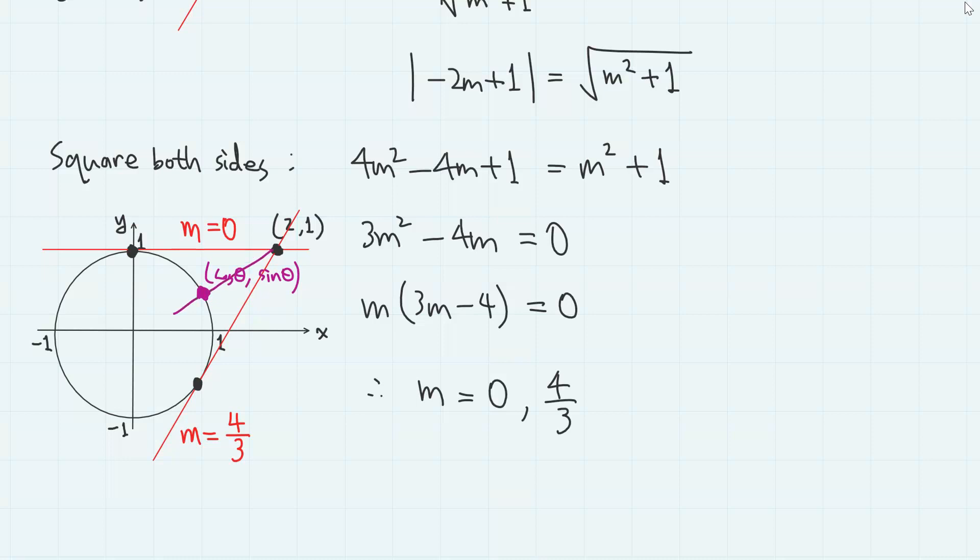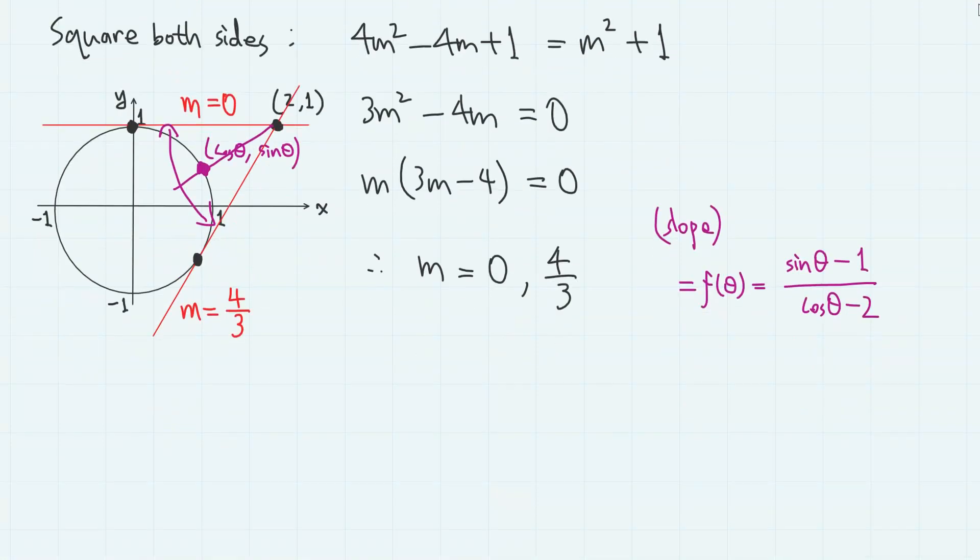the slope, which is f theta, can have the value ranging from here to here. So we have the range f theta is greater than or equal to 0 and less than or equal to 4 over 3.